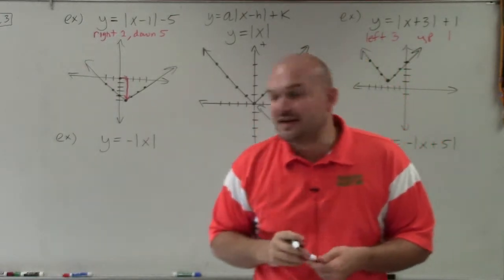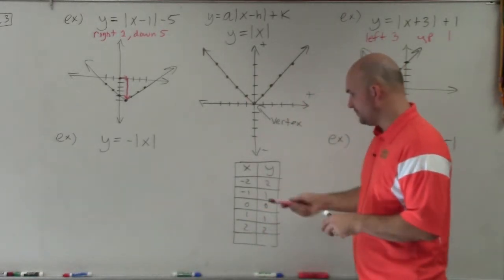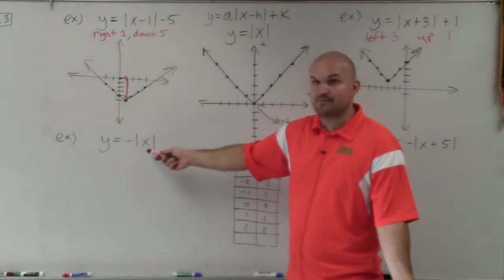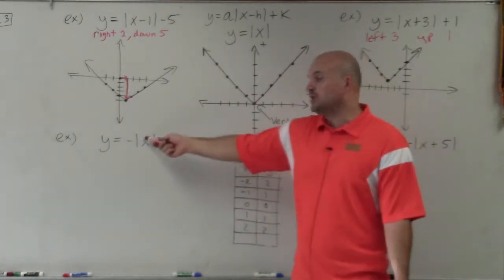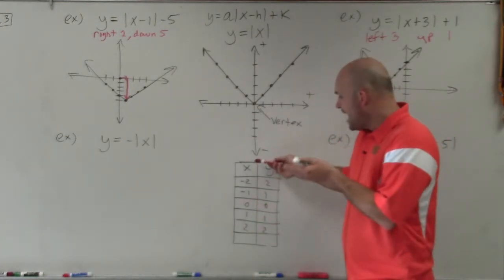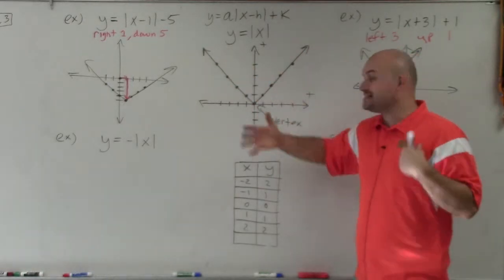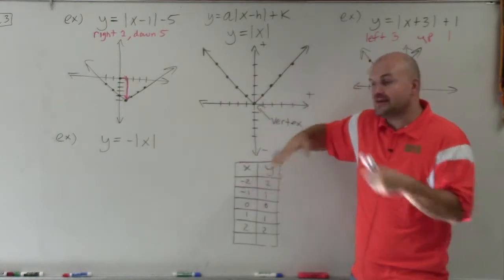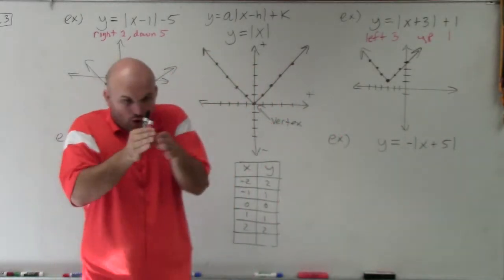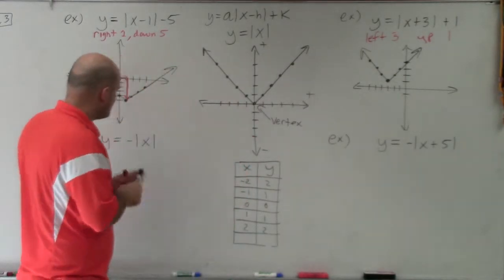So what happens when we have a negative in front of our absolute value? Think about going back to the table. No matter what you take the absolute value of — for example, the absolute value of negative 2 is positive 2 — all of those values are always going to be positive. But if you multiply by negative, that makes all of them negative. So if your x values go like a V but all your y values are negative, what that does is flip this graph over. Instead of going up, the graph is now going to be going down. The slopes go from over 1, up 1 to over 1, down 1.